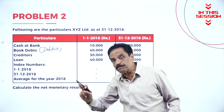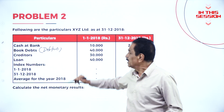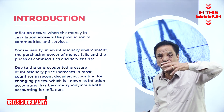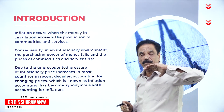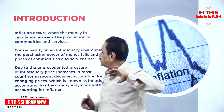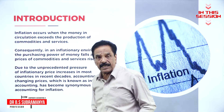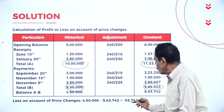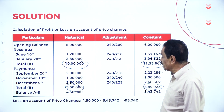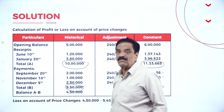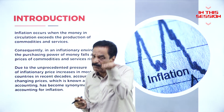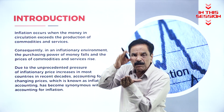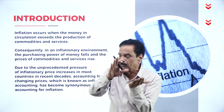That problem is based on receipt and payment account, and this one is based on assets and properties. How the money has been priced has changed depends upon price changes. Inflation accounting has been taken into consideration, so there is a loss on account of price changes to the extent of 93,742. When the price of a commodity rises generally, the purchasing power will go down.